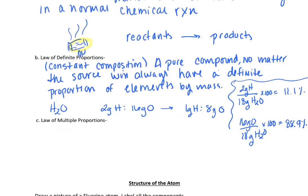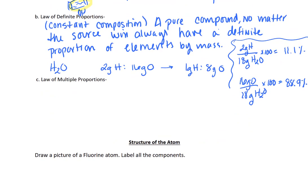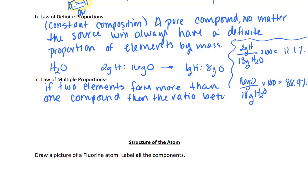Let's finish up with the law of multiple proportions. The law of multiple proportions says that if two elements form more than one compound, the ratio between the masses of the second element will be small whole numbers.